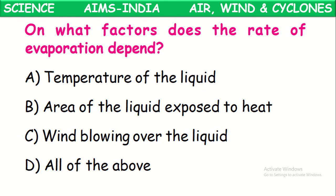On what factors does the rate of evaporation depend? First: temperature of the liquid. If the liquid is at high temperature, the rate of evaporation will be greater; if cool, it will be less. Second: area of the liquid exposed to air. Since evaporation is a surface phenomenon and occurs only from the surface, more exposed surface means faster evaporation. Third: wind blowing over the liquid — if wind blows faster, evaporation is also faster. For example, water poured on the floor evaporates faster when a fan is switched on.